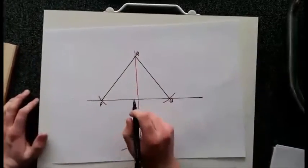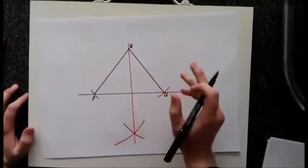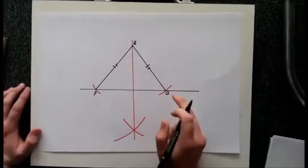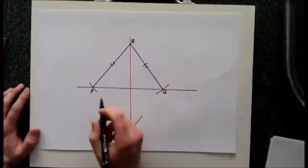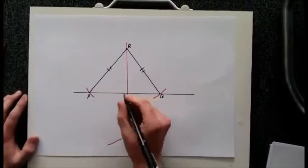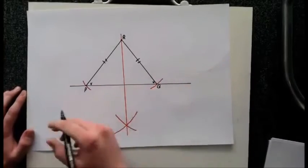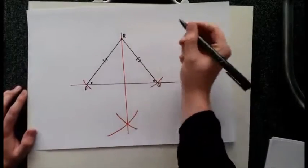These lines are equal because the arc is equidistant from point R. This creates an isosceles triangle, and in an isosceles triangle the two angles at the base are equal, so I will call these both X. And I will call the two angles at the top Y.